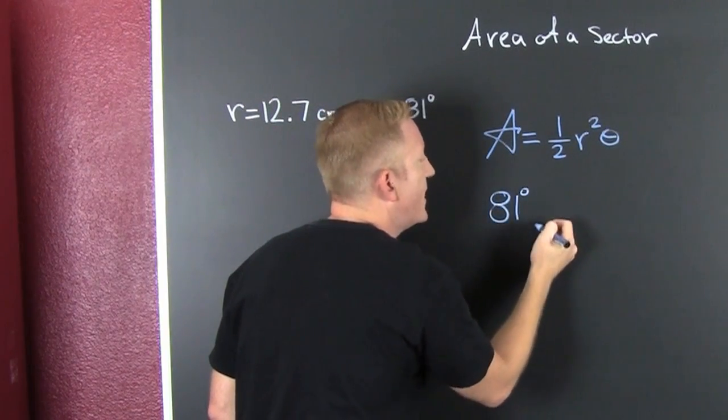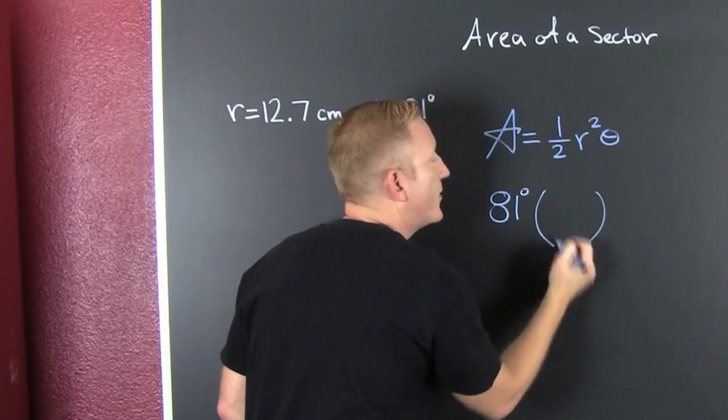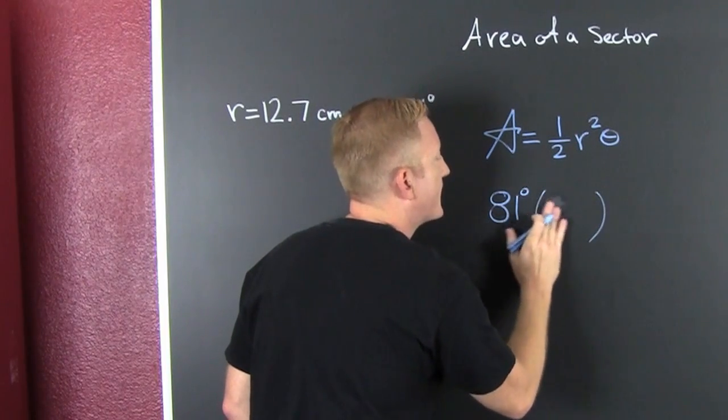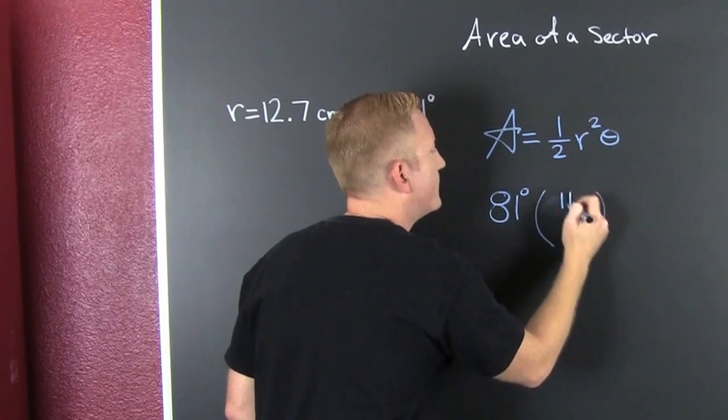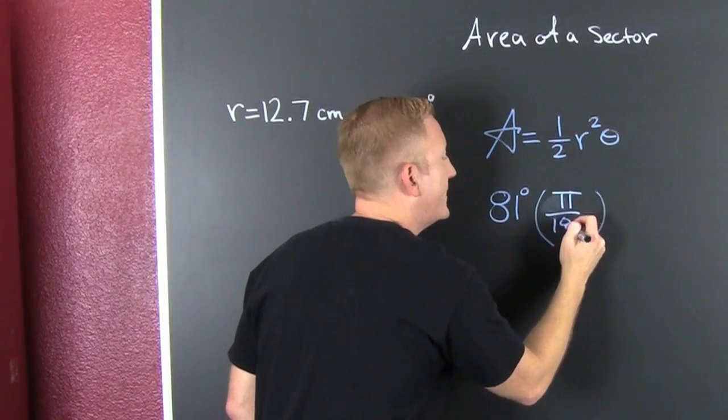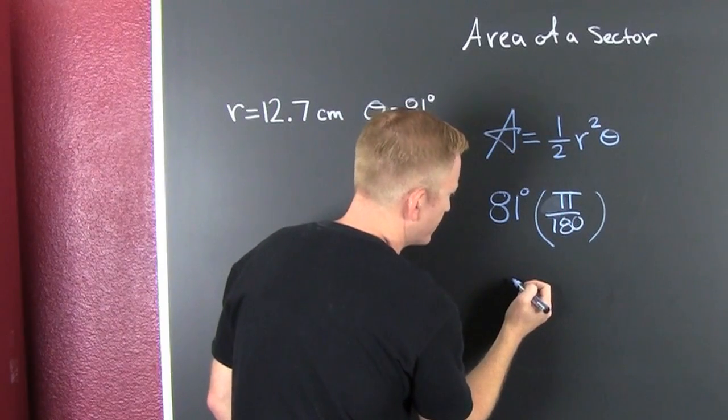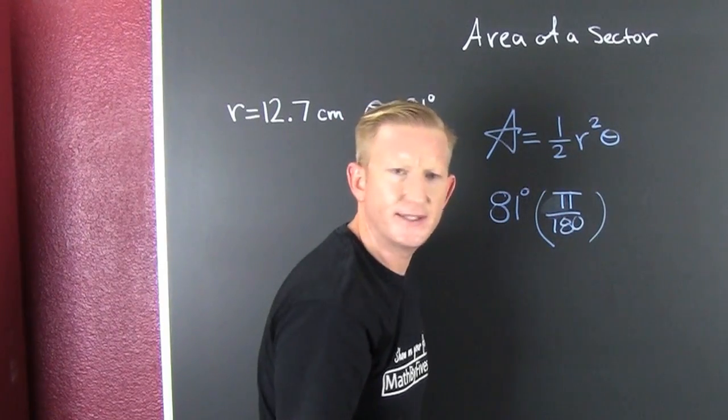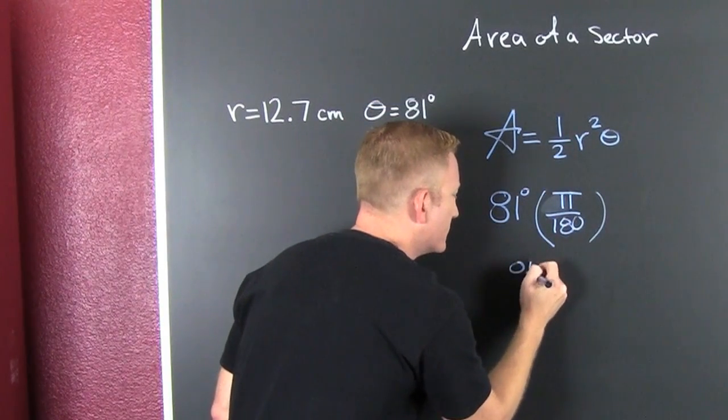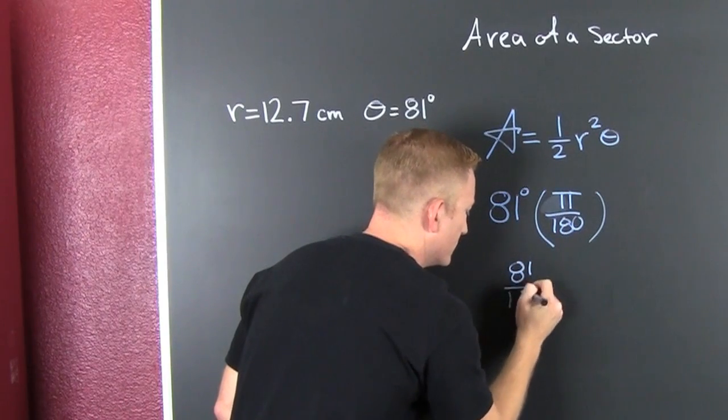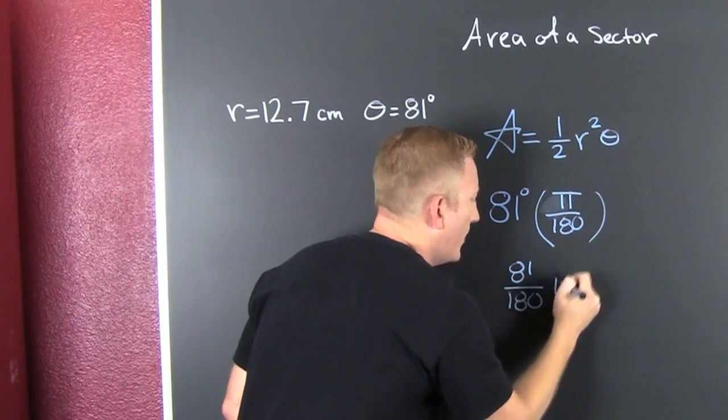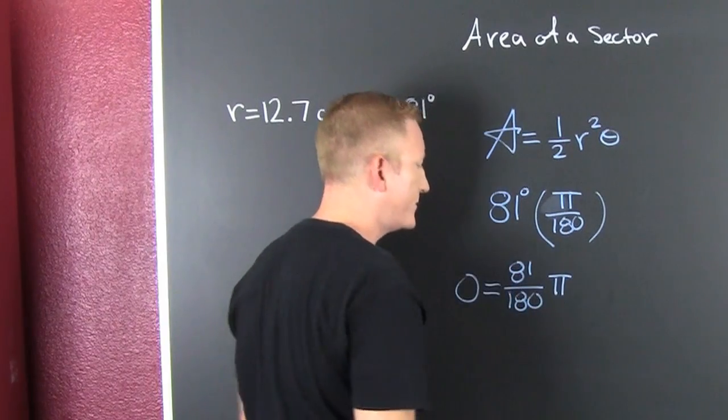We take 81 degrees and we're going to multiply it by our translator, pi over 180. So then what do we get? We get 81 over 180 pi, and then that's going to be the theta we're going to use.